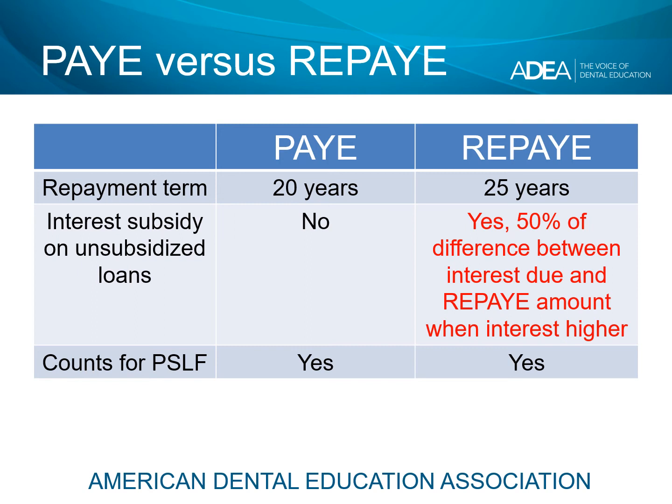One more important thing to note about both PAY and REPAY: payments made under both of these plans do count towards eligibility for the Public Service Loan Forgiveness Program for borrowers who are trying to qualify. And don't forget, we have a separate module on the Public Service Loan Forgiveness Program.